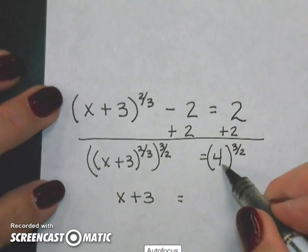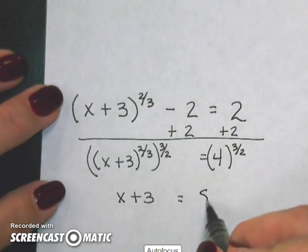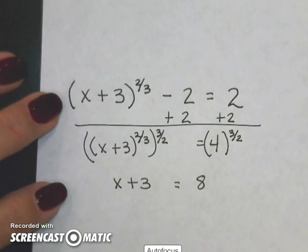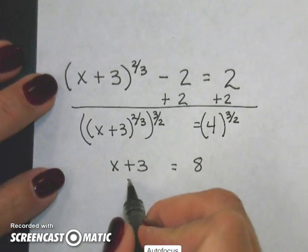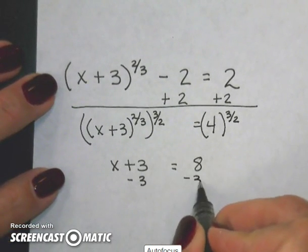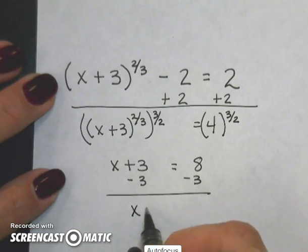Well the square root of 4 is 2, 2 to the third power is 8. And I need to simply finish solving my problem by subtracting 3. And x equals 5.